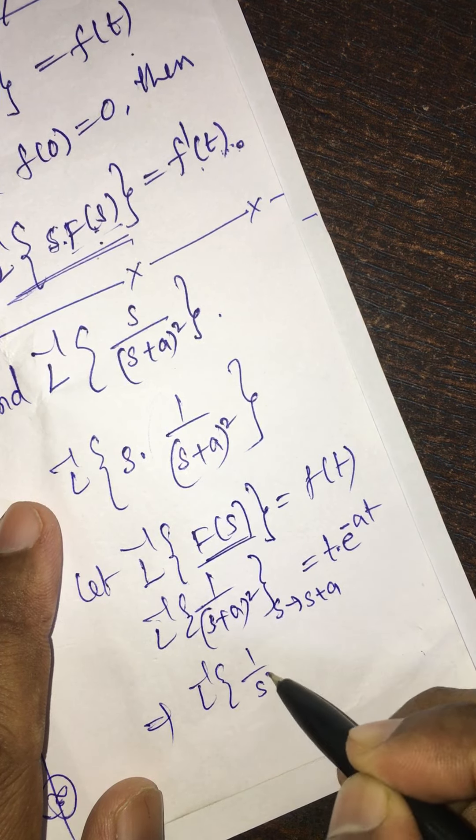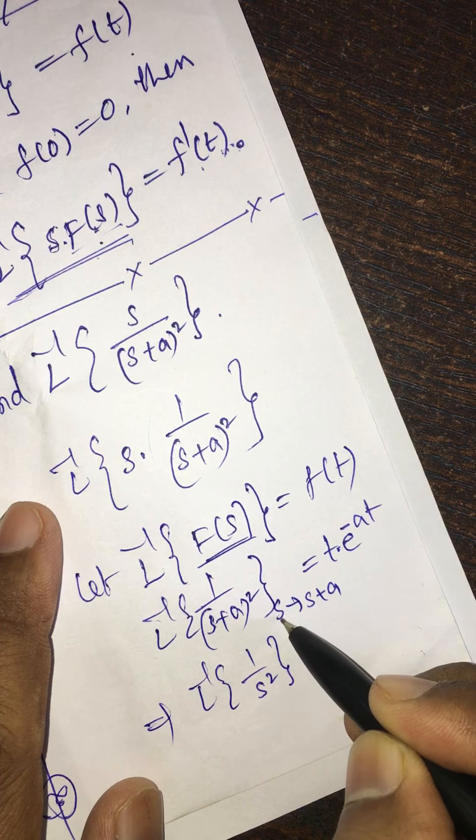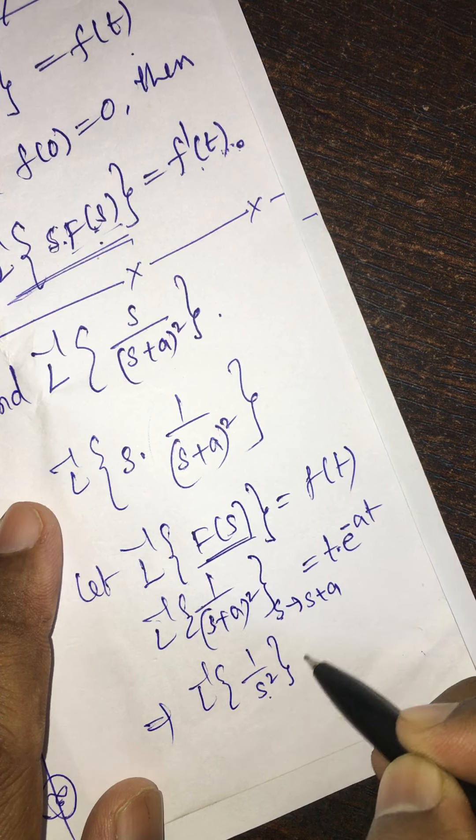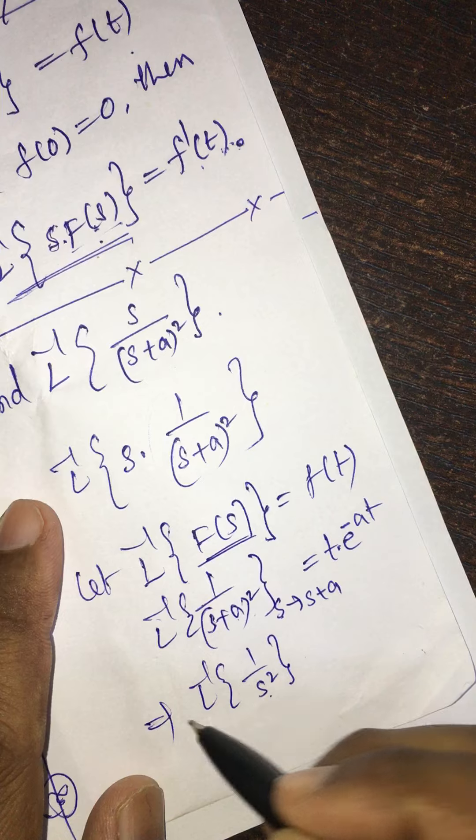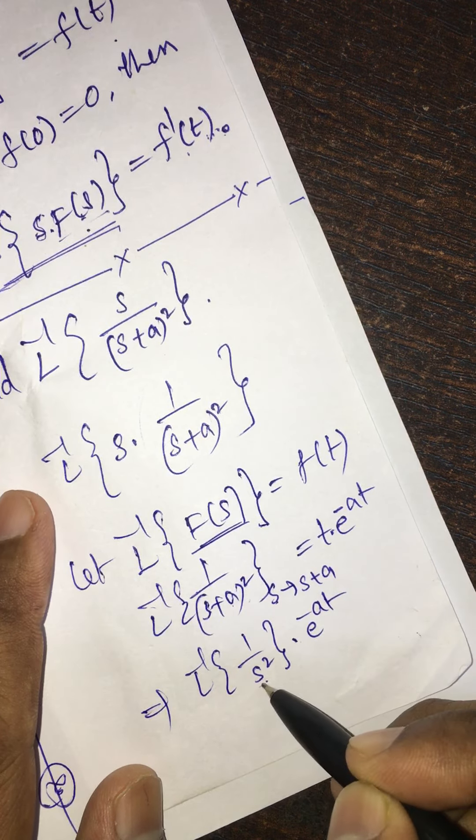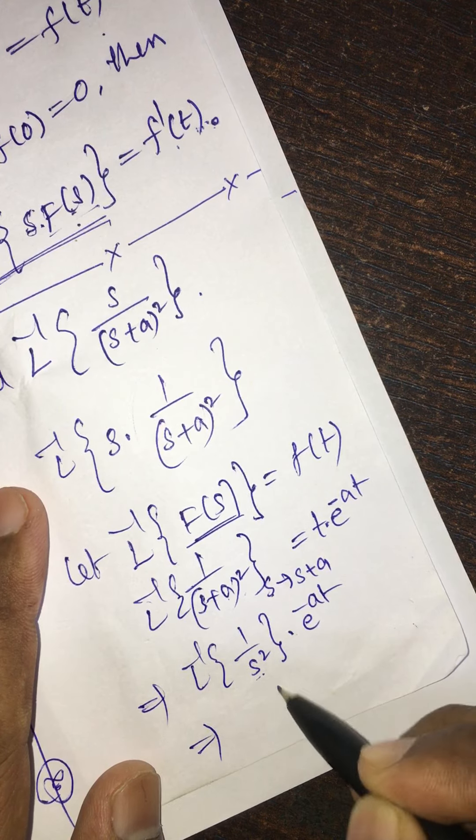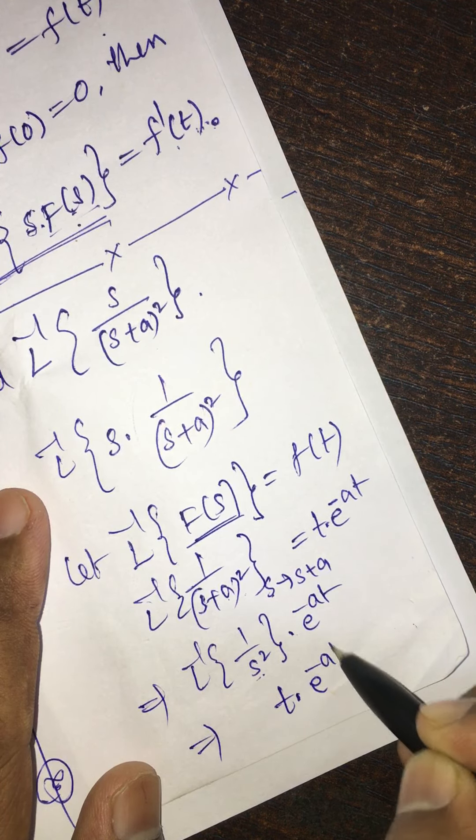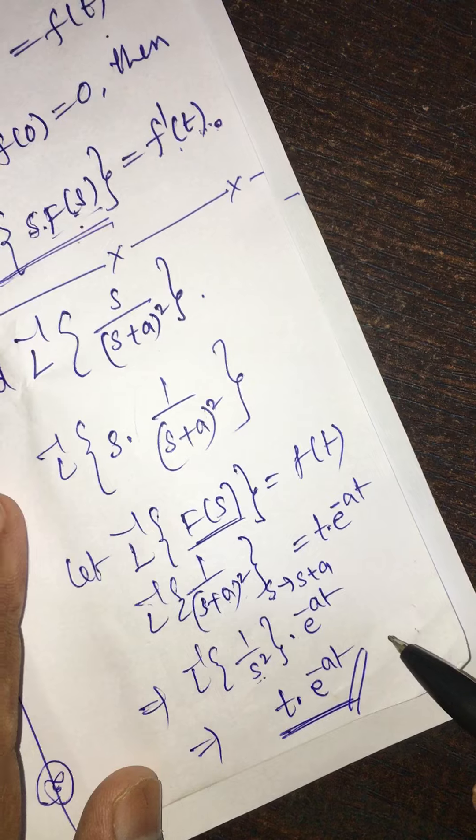1 by s square. In this S place, we have (s+a) whole square. We know L inverse of 1/s square is t, so t into e to the power of minus at. So this is f(t).